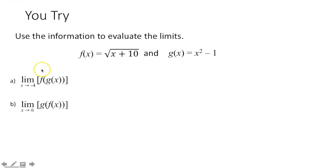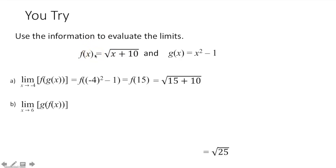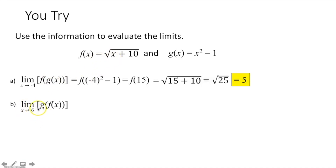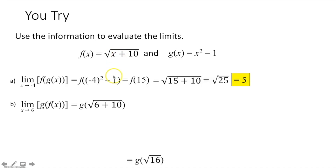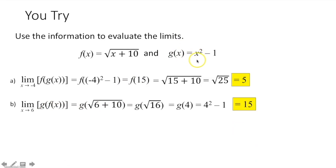You try. The limit as x approaches negative 4 of f(g(x)): plug negative 4 into g(x) — negative 4 squared minus 1 gives 15. Then plug 15 into f(x): 15 + 10 gives the square root of 25, which is 5. The limit as x approaches 6 of g(f(x)): plug 6 into f(x) — square root of 6 + 10 is the square root of 16, which is 4. Then plug 4 into g(x): 4 squared minus 1 gives 15.